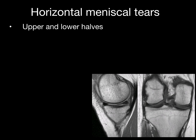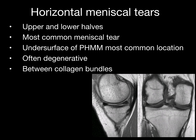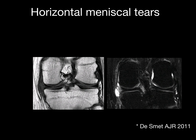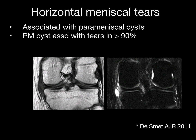Horizontal meniscal tears divide the meniscus into upper and lower halves and are the most common type of meniscal tear, with the undersurface of the posterior horn being the most common location. These are often degenerative and occur between collagen bundles. An example shows a horizontal tear extending to the inferior articular surface of the posterior horn of the medial meniscus. Horizontal tears can be associated with parameniscal cysts. When you see a parameniscal cyst, it is associated with a tear greater than 90% of the time — except adjacent to the anterior horn of the lateral meniscus, where the association is 64%.